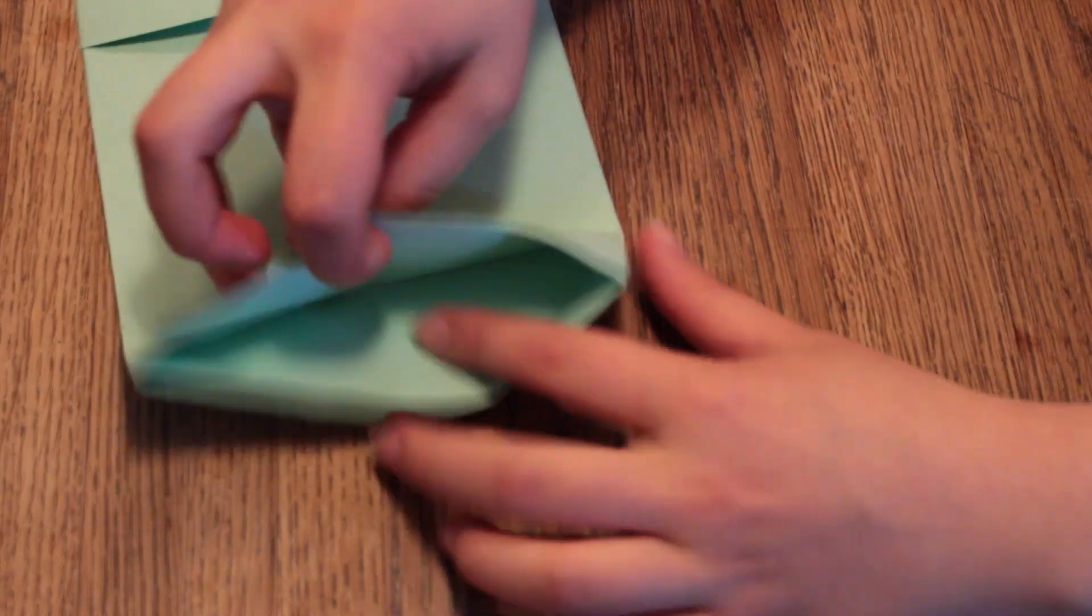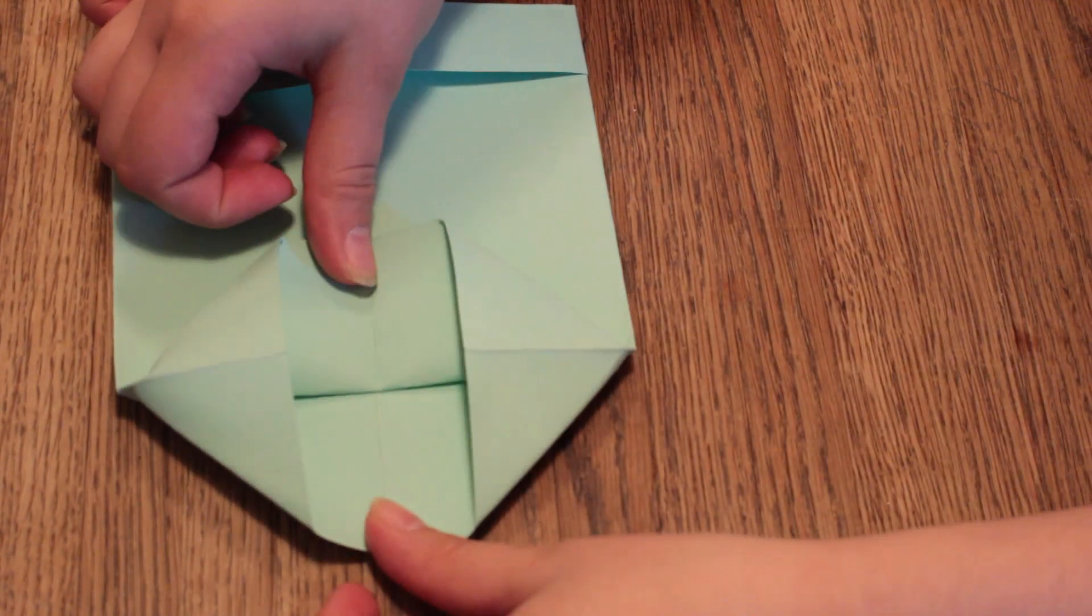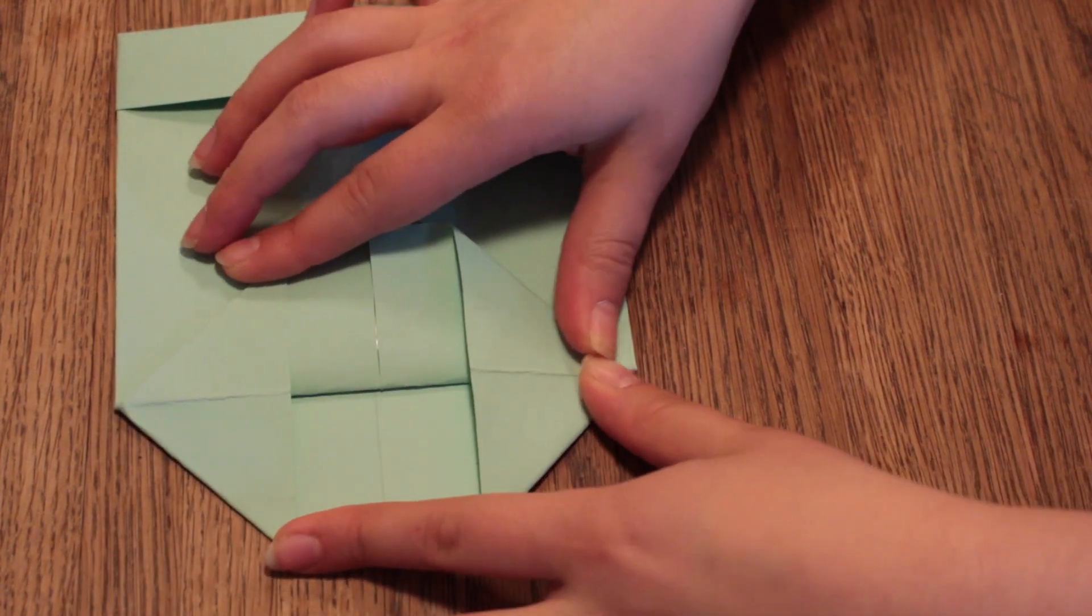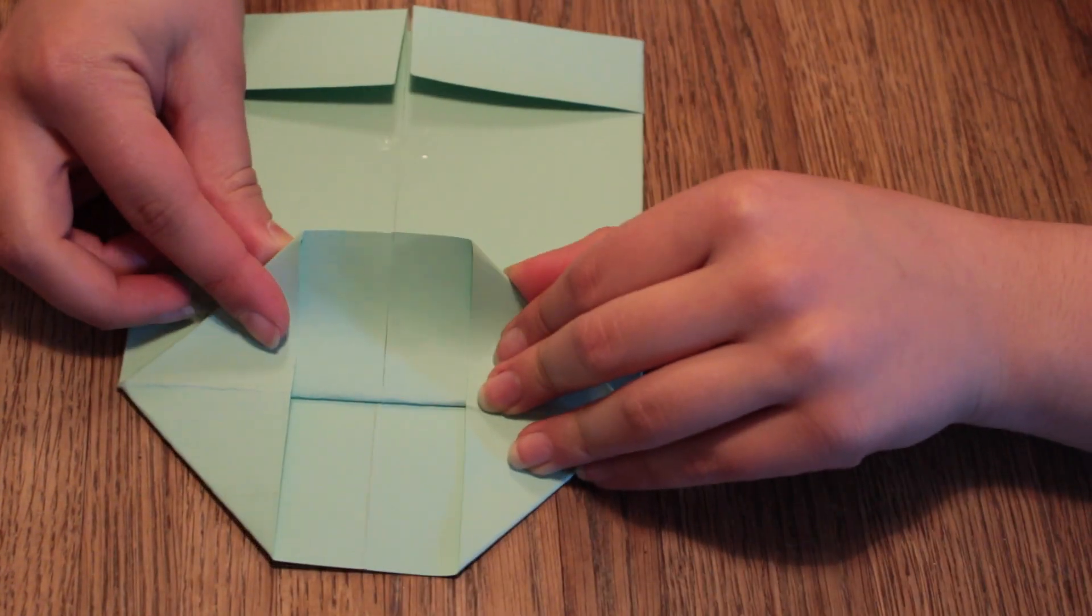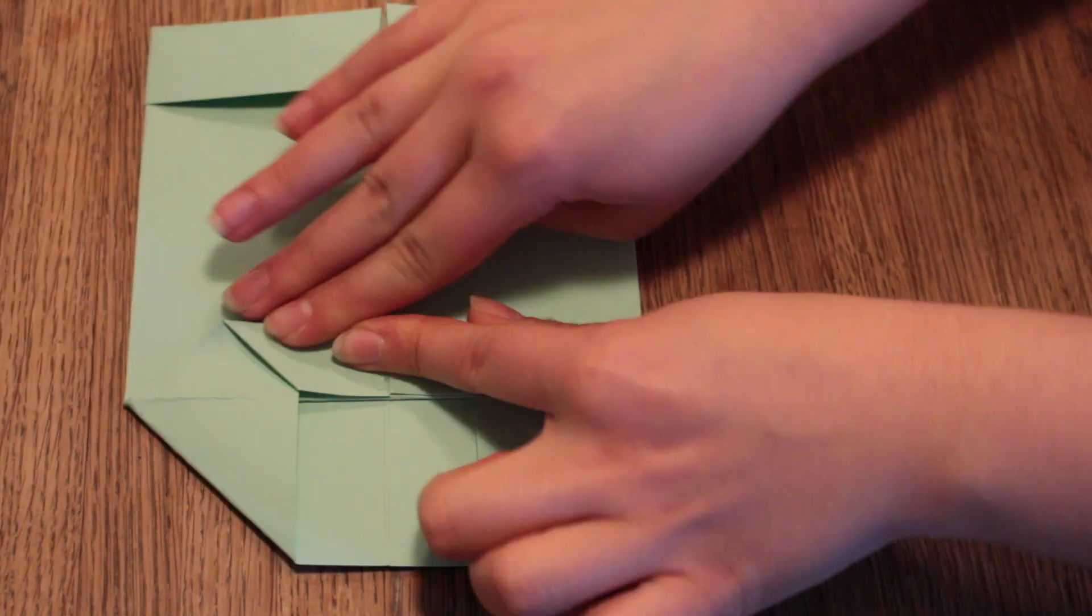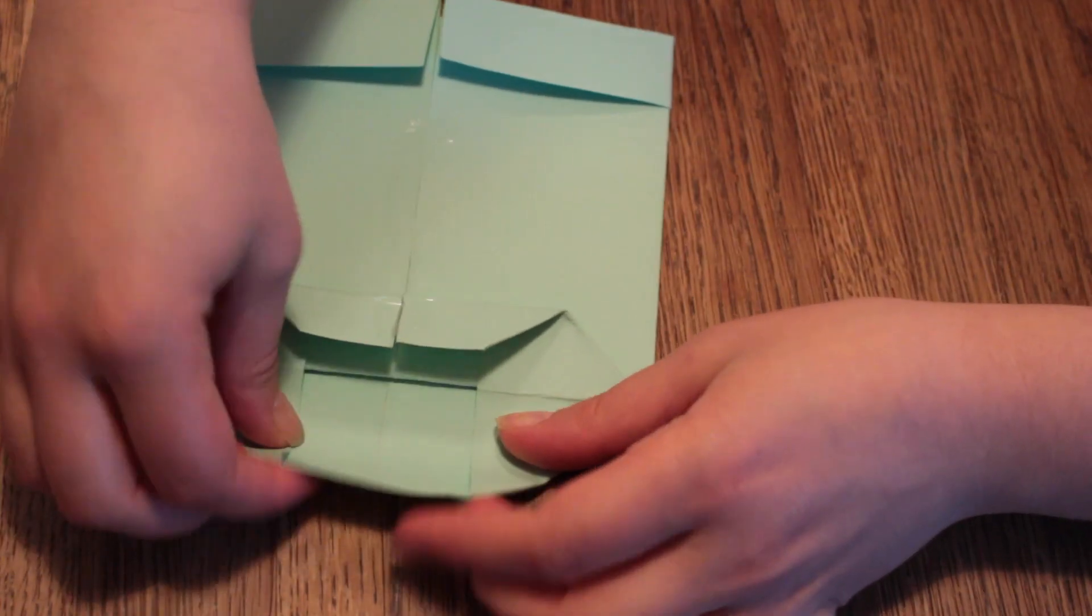Now open up the bottom part and then press down on each of the sides. Then take one of the sides and fold it right down to the middle. And do the same thing with the other side.